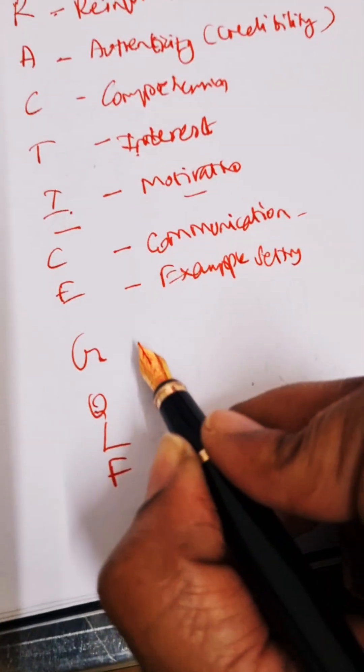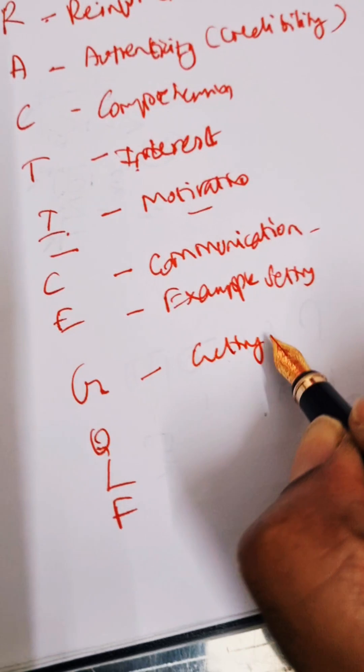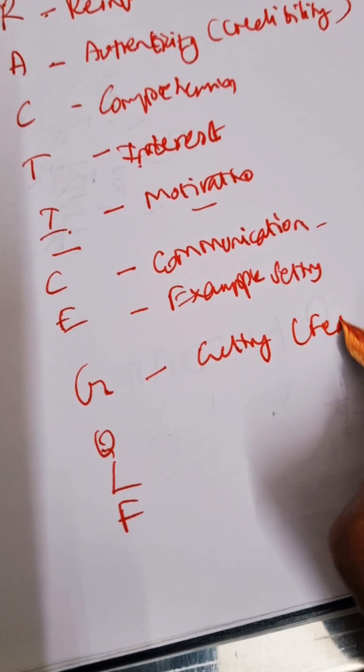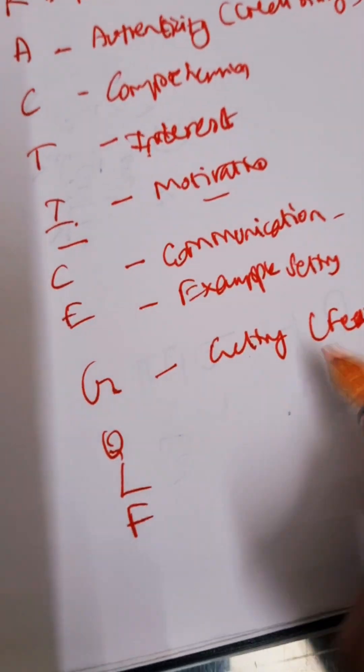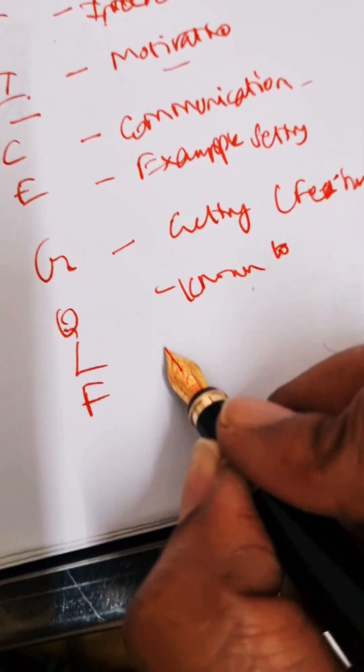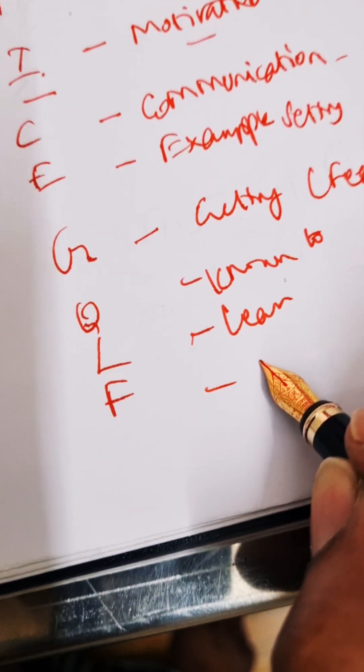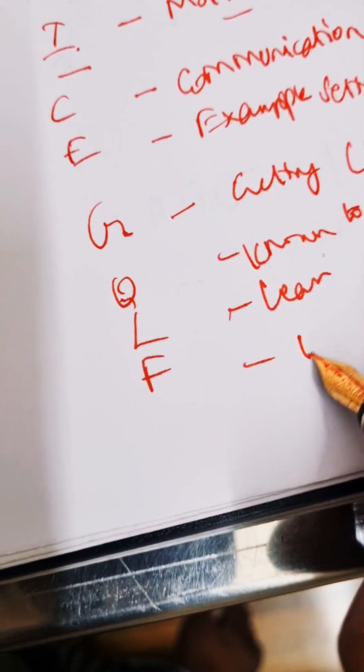G is getting response. Getting response is nothing but feedback. O is from known to unknown. L for learning by doing, and F for following local influences.